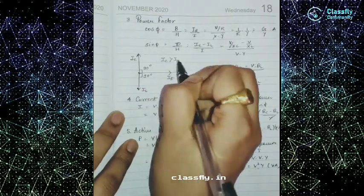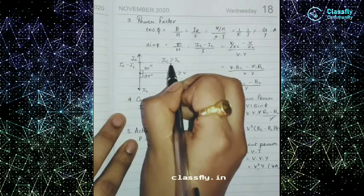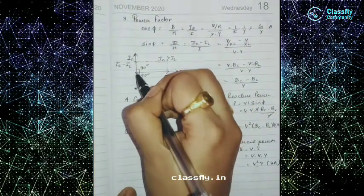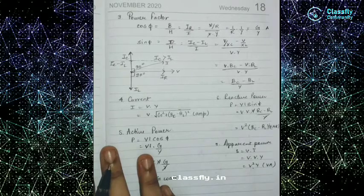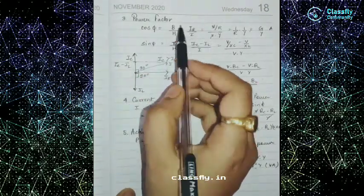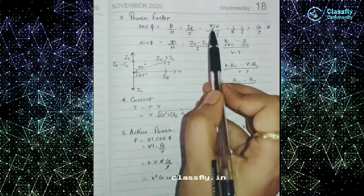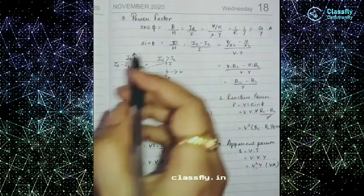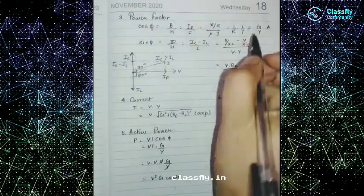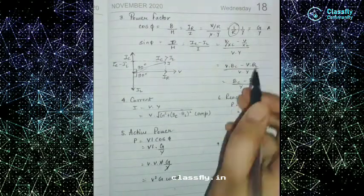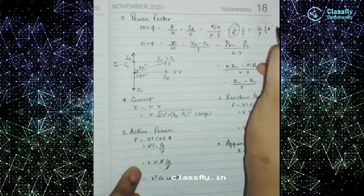Assuming IC is greater than IL, the resultant is IC minus IL. The total current I is the combination of IC, IR, and IL. For cos φ, it is base over hypotenuse, so IR over I. Since IR = V/R and I = V·Y, the V cancels. IR/V equals conductance G, so cos φ = G/Y.